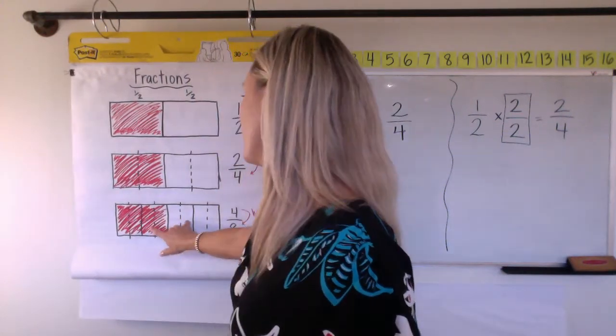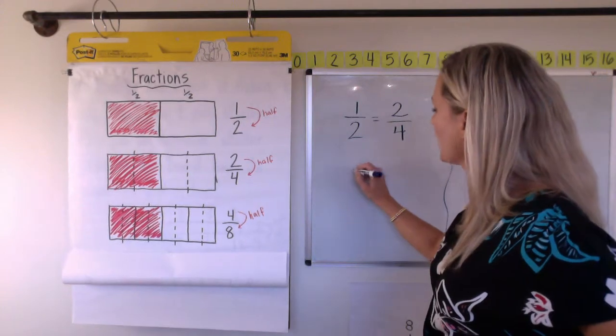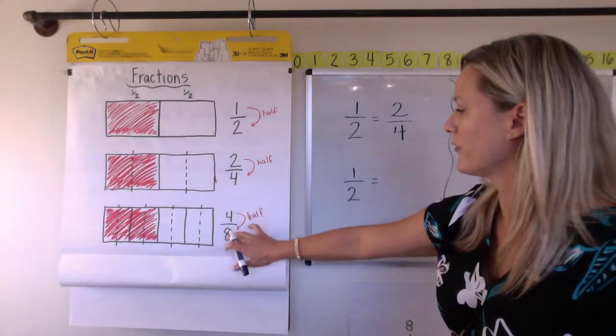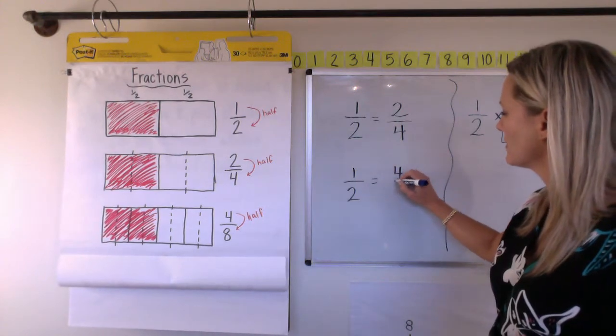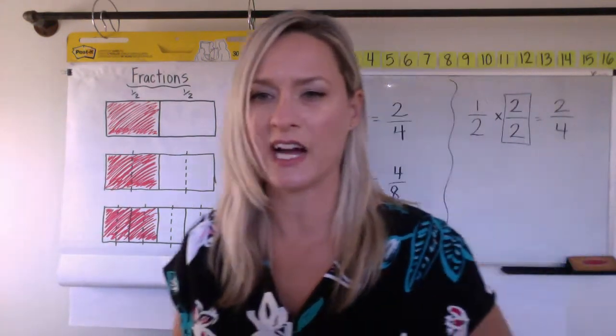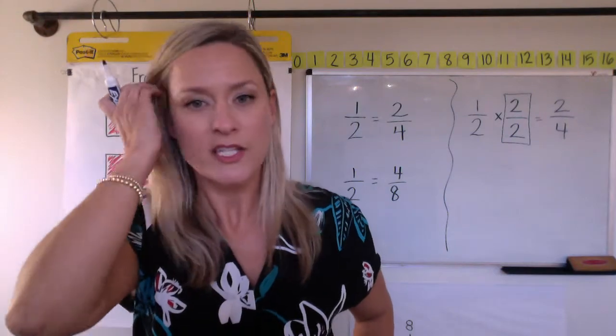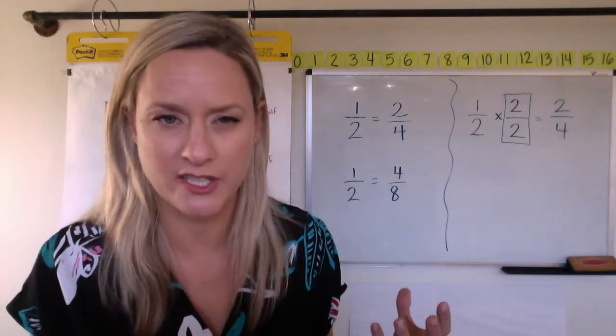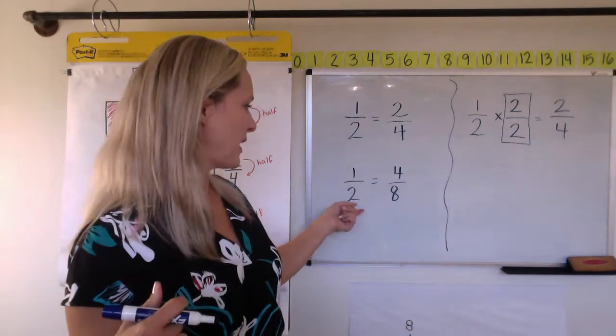Let's start with one half again. So one half is equal to four eighths. We had already figured that out in another lesson, right? So we are starting to notice those patterns, but how can we generate it without the picture?